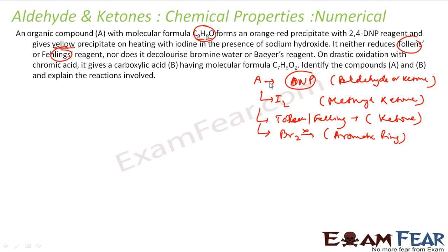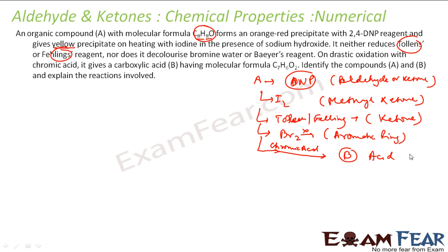On drastic oxidation with chromic acid, compound A gives carboxylic acid B with formula C7H6O2. So under drastic conditions with chromic acid, the ketone is oxidized to give acid B.